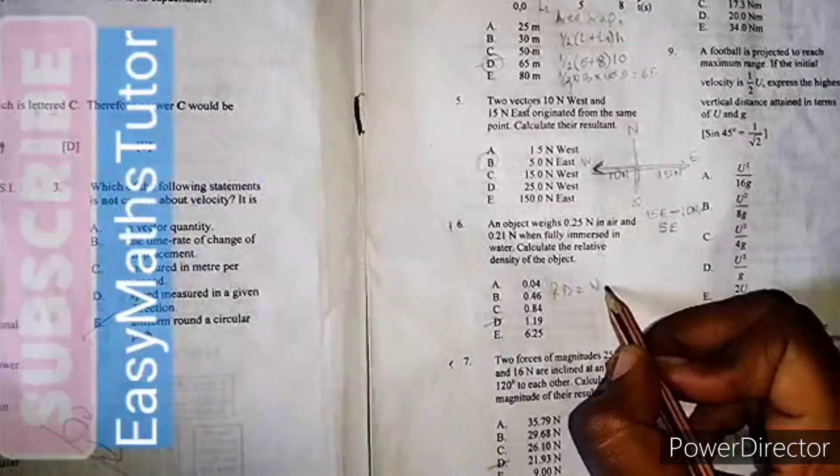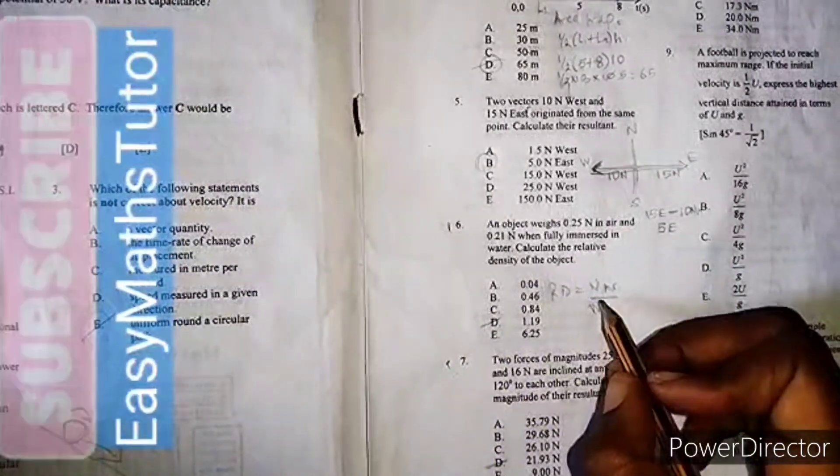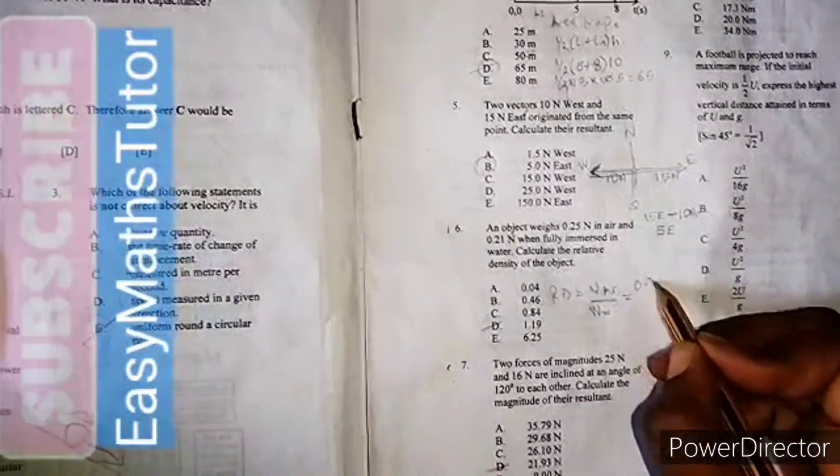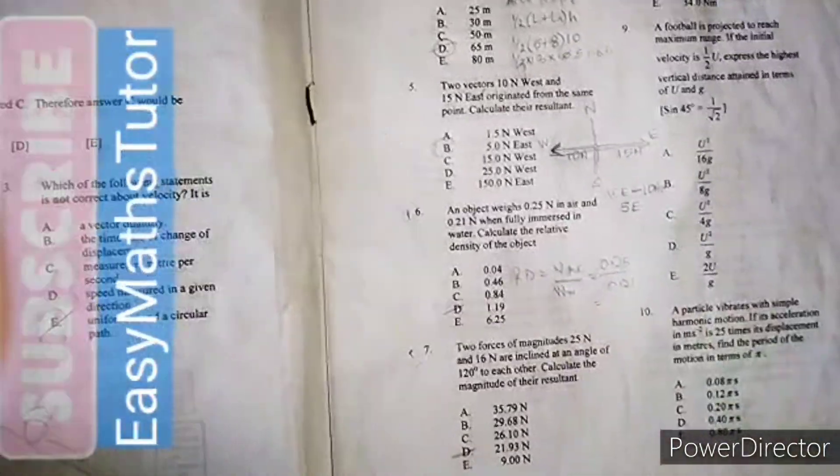The relative density will be the weight of the object in air over the weight of the object in water. That will be 0.25 over 0.21. Using our calculator, 0.25 divided by 0.21, our answer will be 1.19.